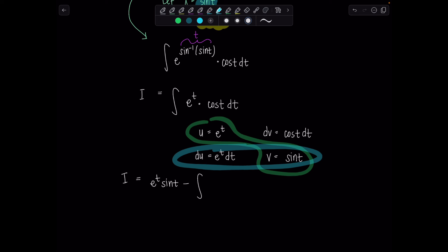So then i, my integral, this antiderivative that I'm trying to find, is equal to, by our by-parts formula, e to the t sine t minus integral of this product here, which is e to the t sine t dt.